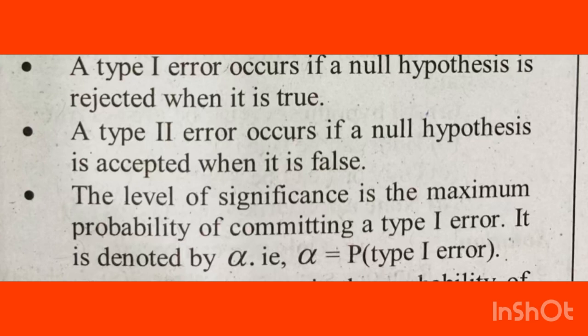An important question is: what is Type 1 and Type 2 error? Type 1 error is an error where the null hypothesis is rejected when it is actually true. That is, the null hypothesis is correct, but we are rejecting it — that is Type 1 error.